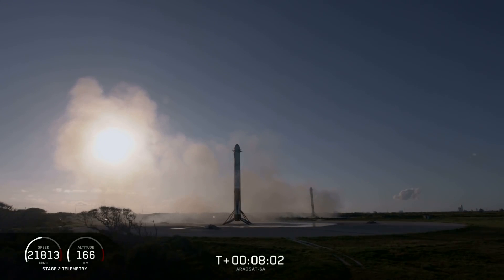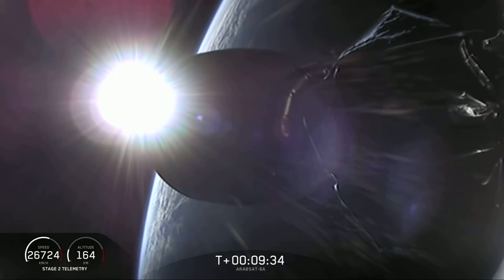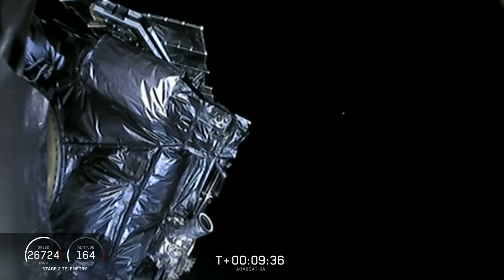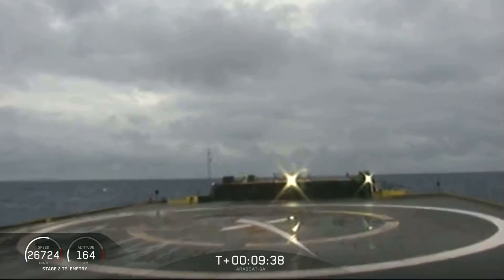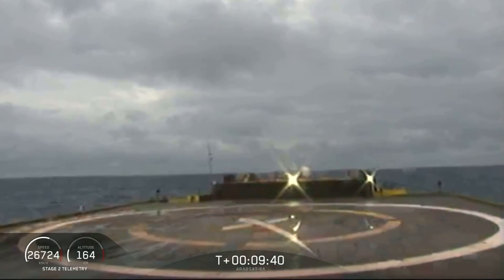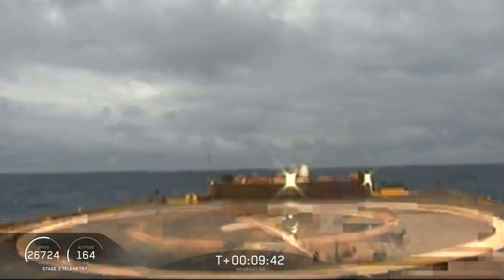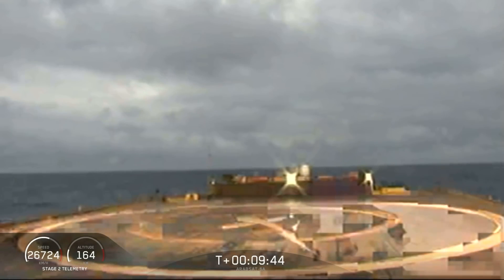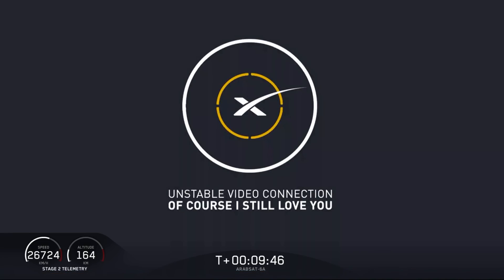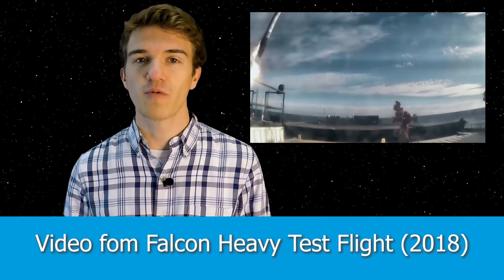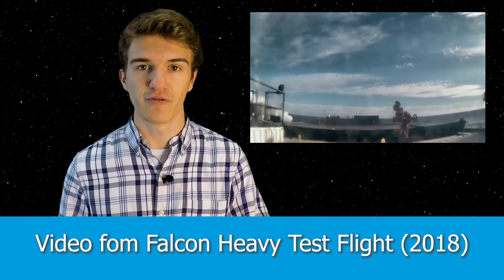But if you continue to watch, a lot of people were skeptical about whether or not the center booster could successfully land. And this is because this isn't like a normal Falcon 9 booster. It has to be modified to be able to hold the structural loads of having two boosters on the side of it. Therefore, it's kind of like this intermediate booster that hasn't necessarily been landed before. If you recall, in the first Falcon Heavy flight, it didn't successfully land. In fact, it crashed into the ocean. So they weren't 100% sure whether or not this would actually land on the drone ship.